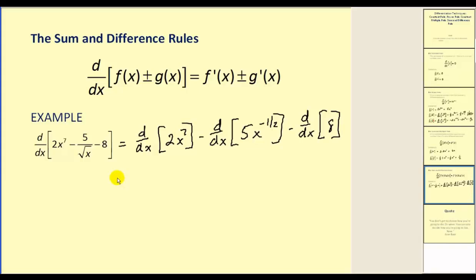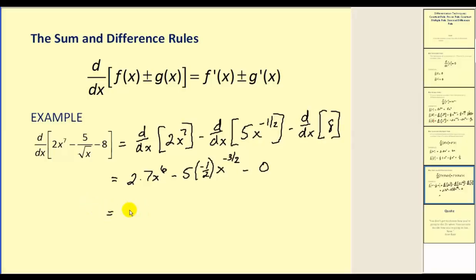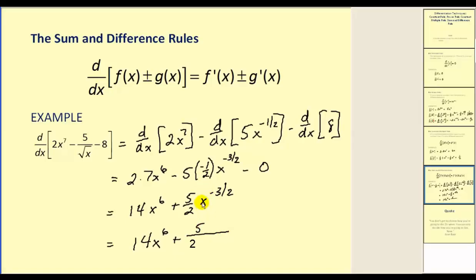Now we'll apply the power rule to each of these terms to find the derivative. So here we'd have two times seven x to the power of six, minus five times negative one-half, times x to the power of negative one-half minus one, which would be negative three-halves. The derivative of eight would be zero. Let's simplify: we'd have 14 x to the sixth plus five-halves x to the negative three-halves power. We can move this to the denominator to make it a positive exponent. So simplifying, I'll move the x to the denominator to make it x to the power of three-halves.